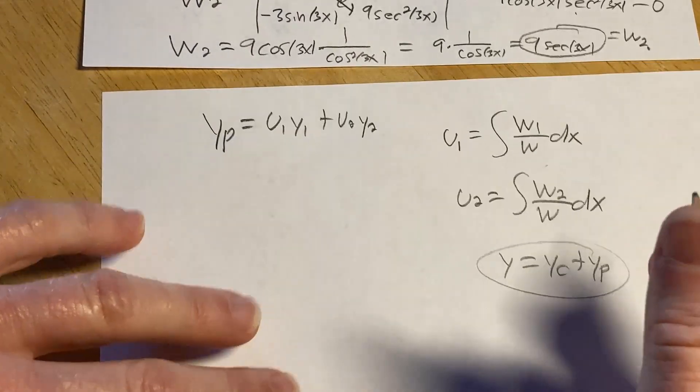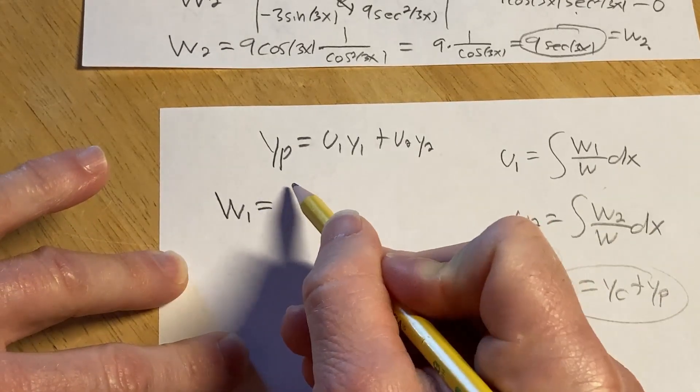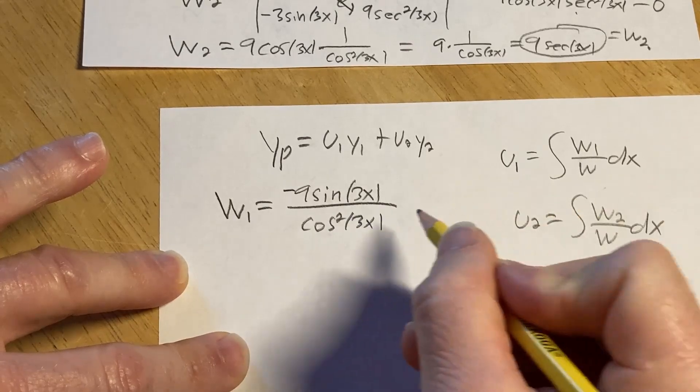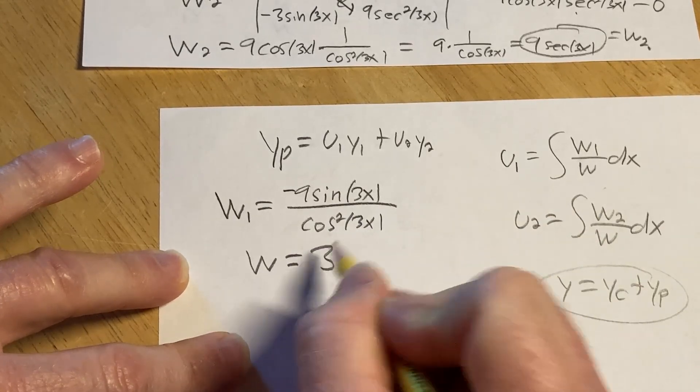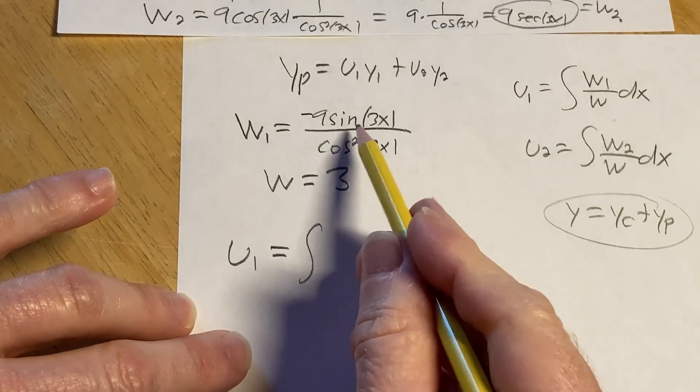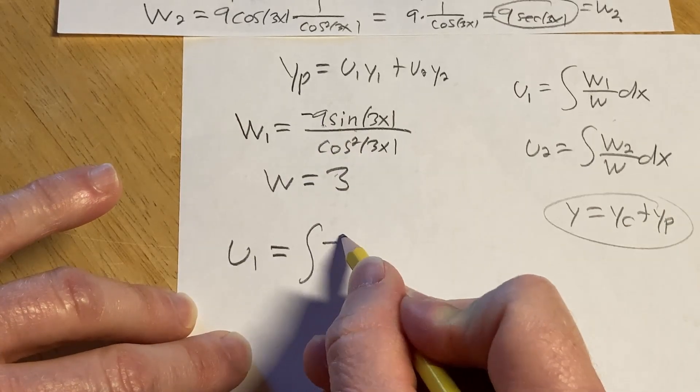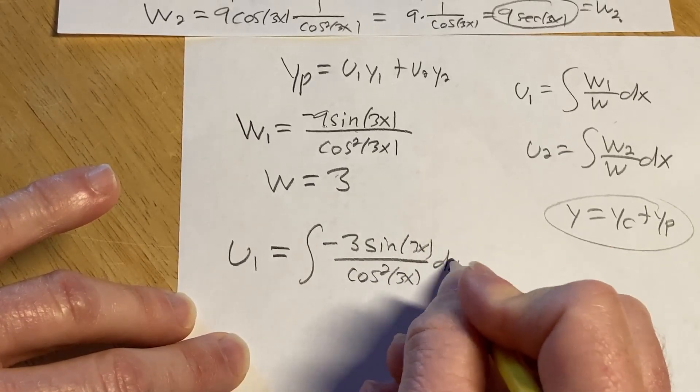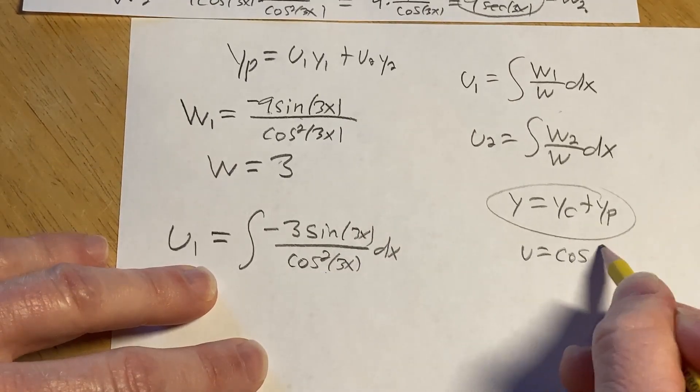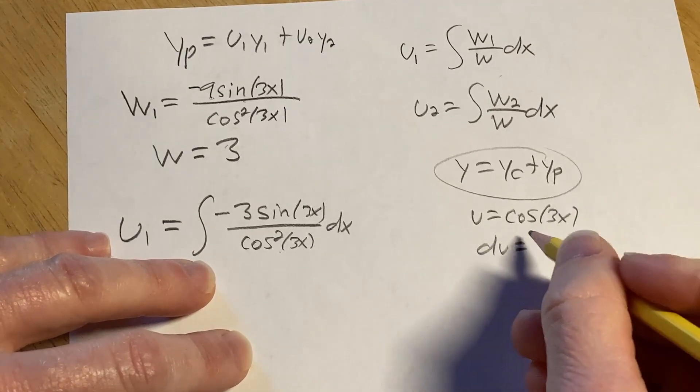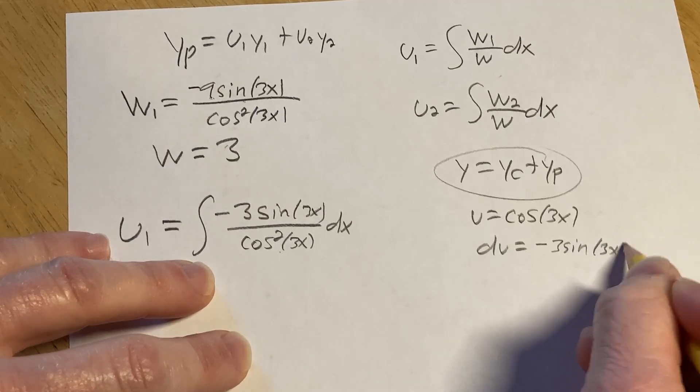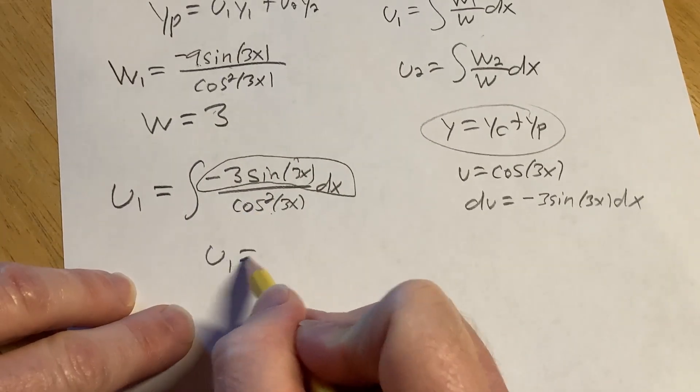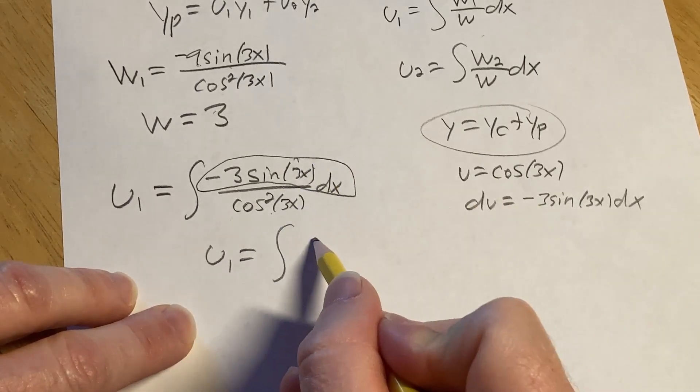This problem is rigged. It's from a math book. So we're going to be able to integrate everything with no issues. So w1 was negative 9 sine 3x over cosine squared 3x. And w is 3. So for u1, it's going to be the integral of negative 3 sine 3x over cosine squared 3x dx. Now we let u be cosine 3x. So then du is going to be negative 3 sine 3x dx, chain rule. And look how set up this is. It's just rigged. Look at that.